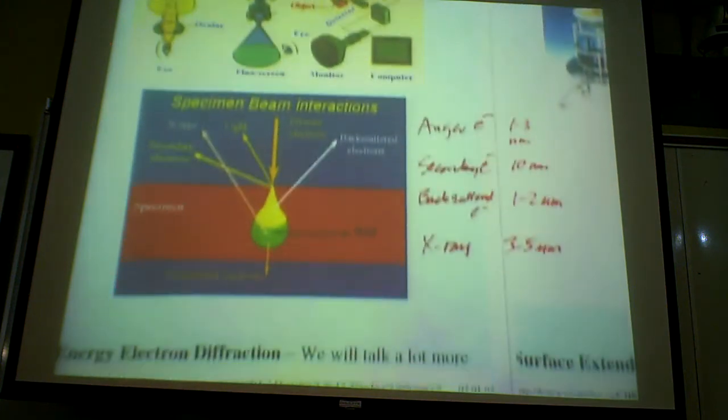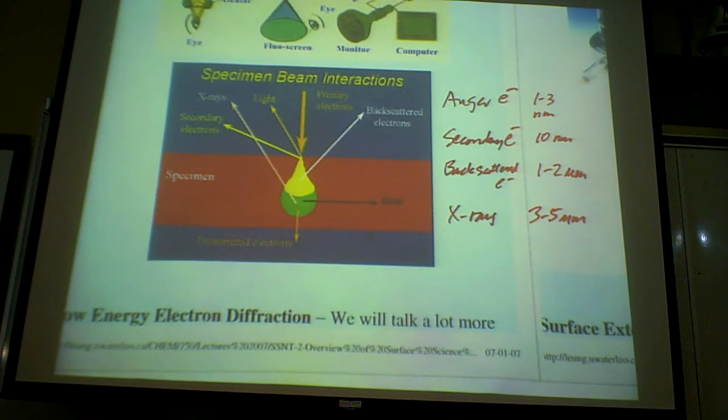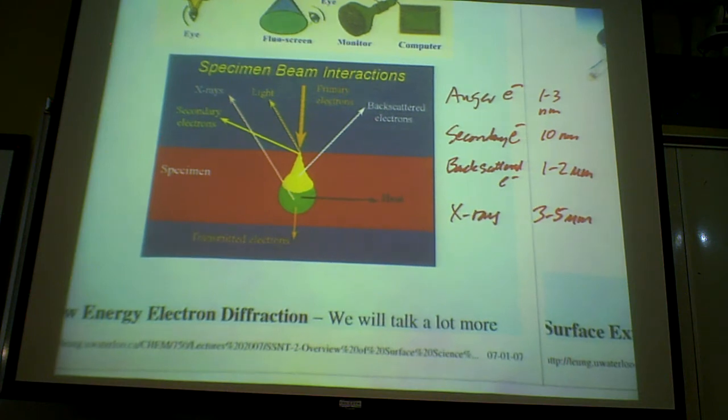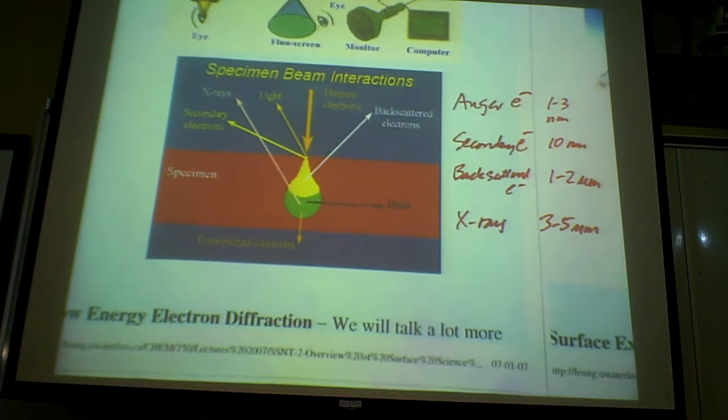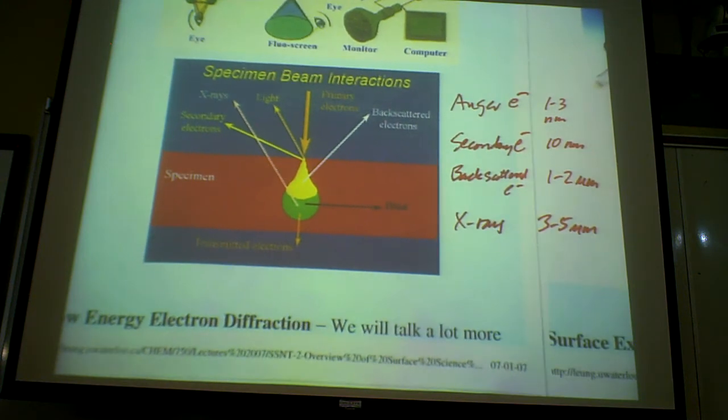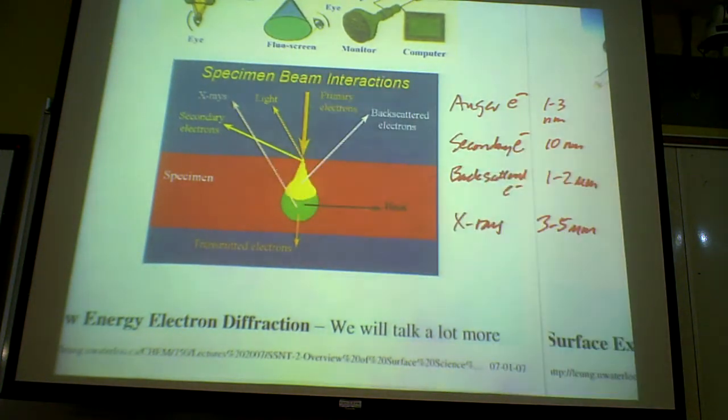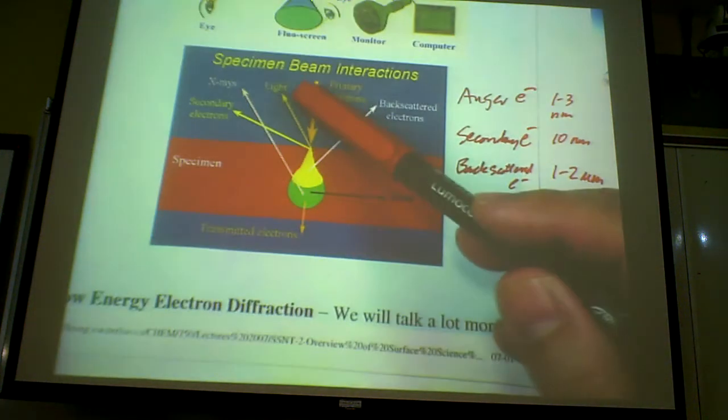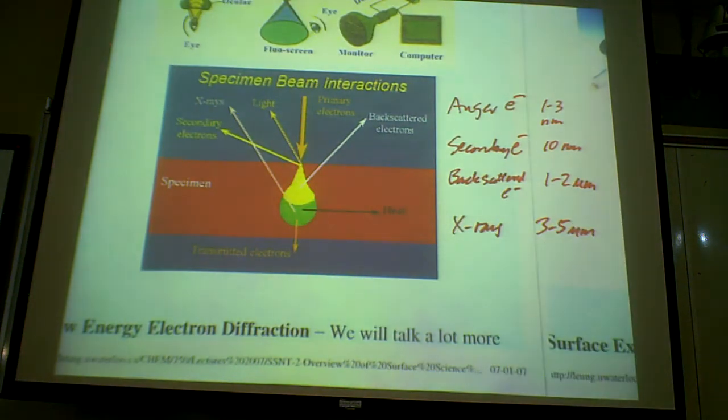What we were talking about before we closed last day was this part that we have. It's also a very important part when we talk about electronic reactions with the specimen. And what happens when you have a fast-moving electron hitting your specimen. What actually happens inside this specimen? And there's many processes going on as the fast electron will go into this specimen.